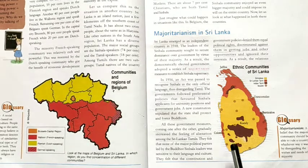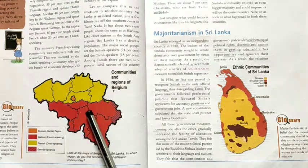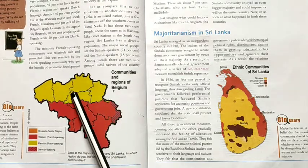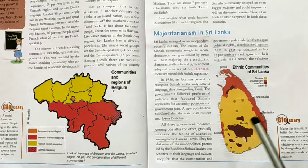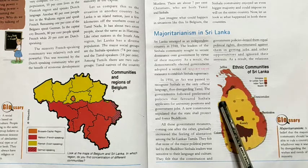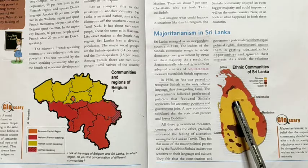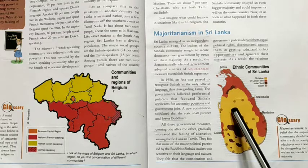From the given map, you can see how different language speakers are distributed. In the Belgium map, the red color is the French speaking area, the other color is Dutch speaking, another is German speaking, and the capital Brussels is also marked. In the Sri Lanka map, the large area is covered by Sinhala speakers, and there are areas for Sri Lankan Tamils, Indian Tamils shown in dark brown, and small dots represent Muslims.